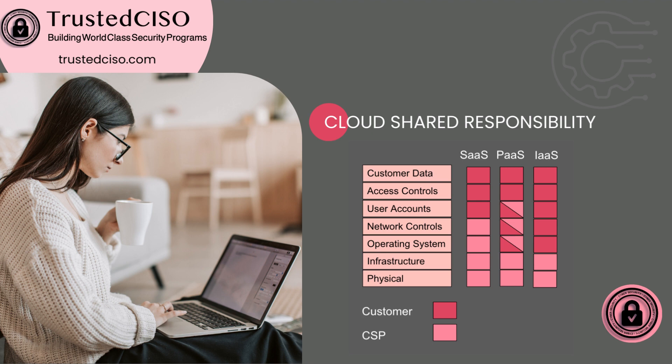For platform as a service, there's a bit more responsibility on the customer. With the operating system, you can say you want the hardened Linux or just regular Linux, but there may be some configurations you need to make. Network controls, for example, would include your network access control lists, your security groups, and settings like making your S3 bucket private rather than public. These are settings that it's up to the customer to configure in order to secure the data.